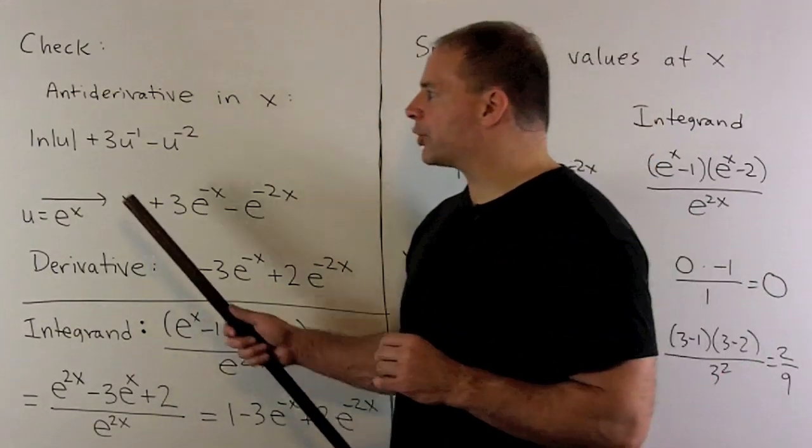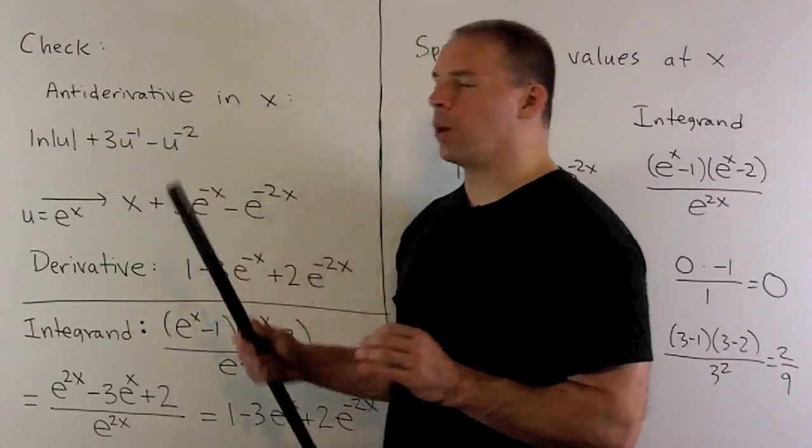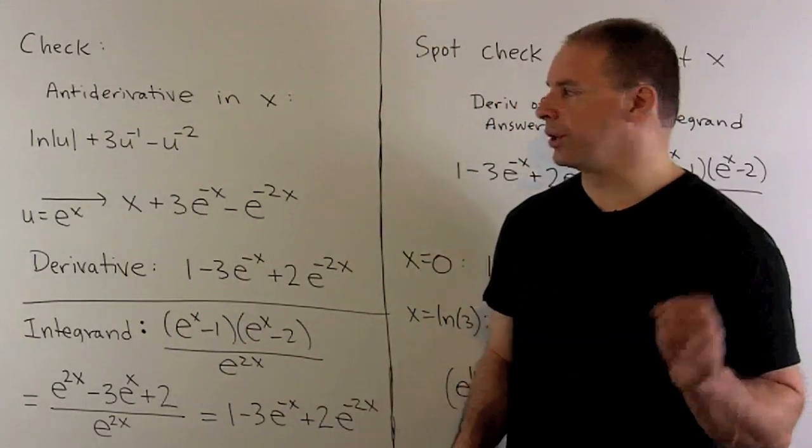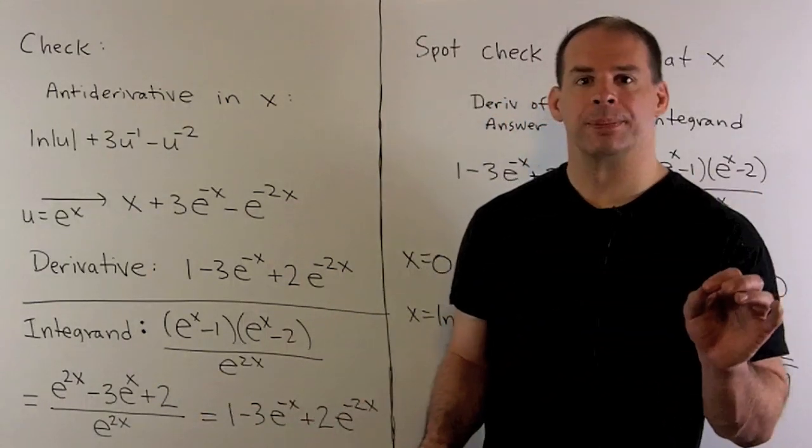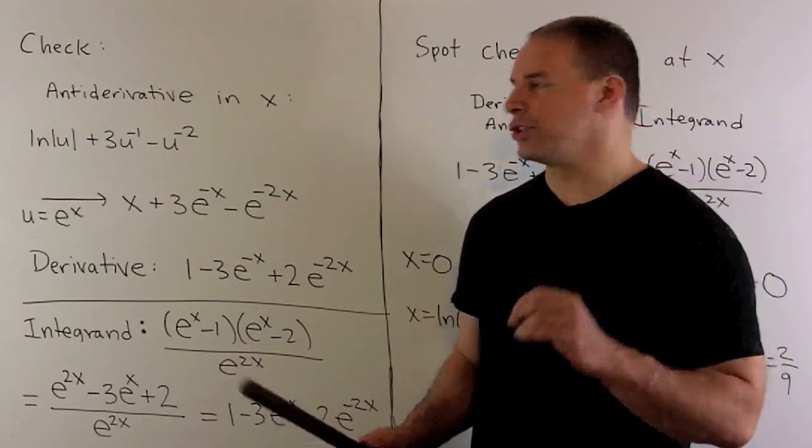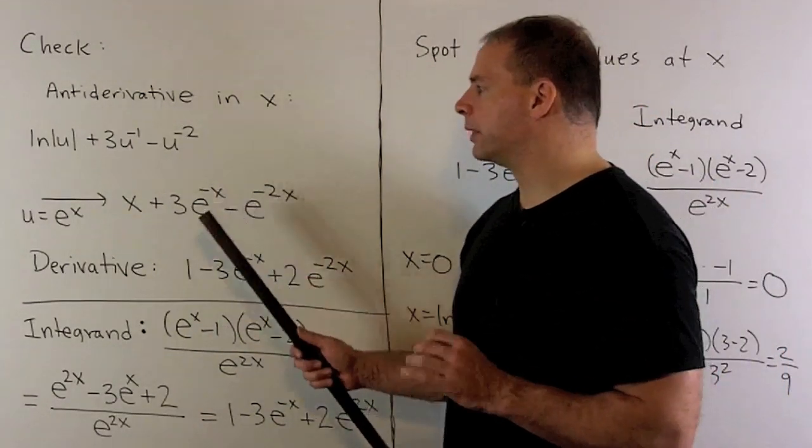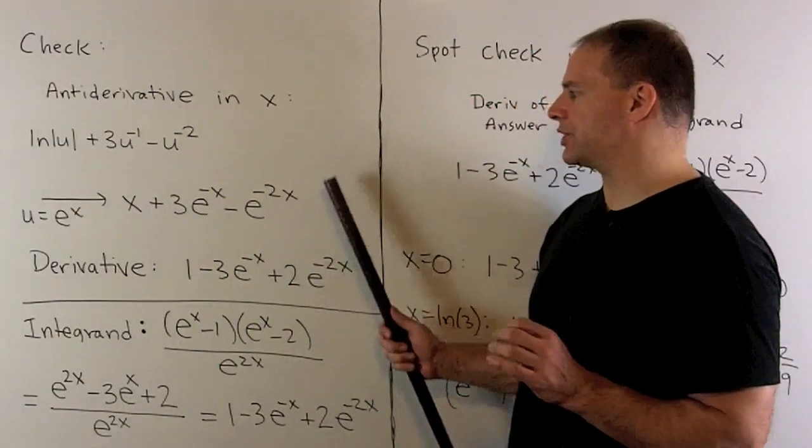So, our answer is natural log of absolute value of u plus 3u to the minus 1 minus u to the minus 2. Now, our integrand is in terms of x, so I use our substitution, u equal to e to the x, to get this in terms of x also. So we wind up with x plus 3e to the minus x minus e to the minus 2x.